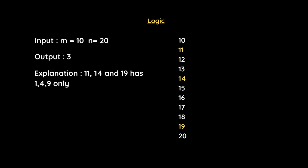Now let's look at the logic with another example: m=10 and n=20. The output should be 3, because 11, 14, and 19 have only 1, 4, and 9 as their digits.